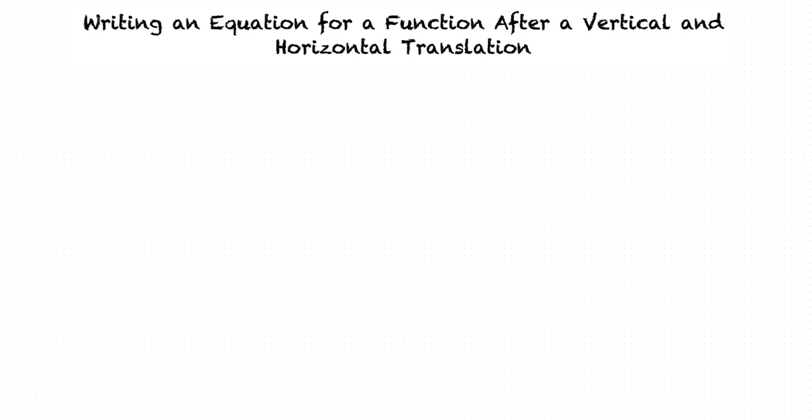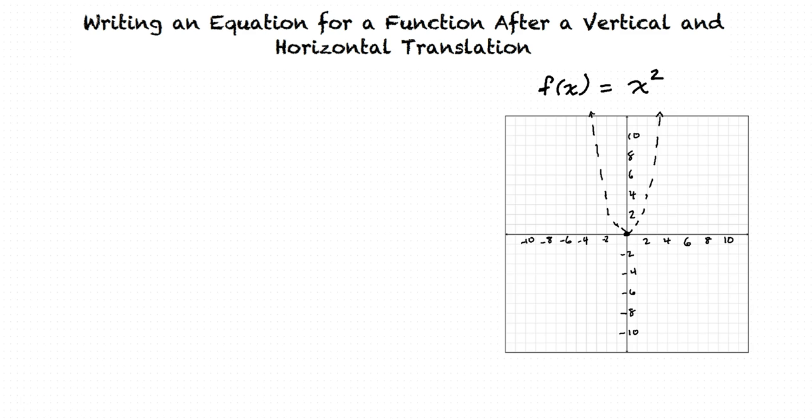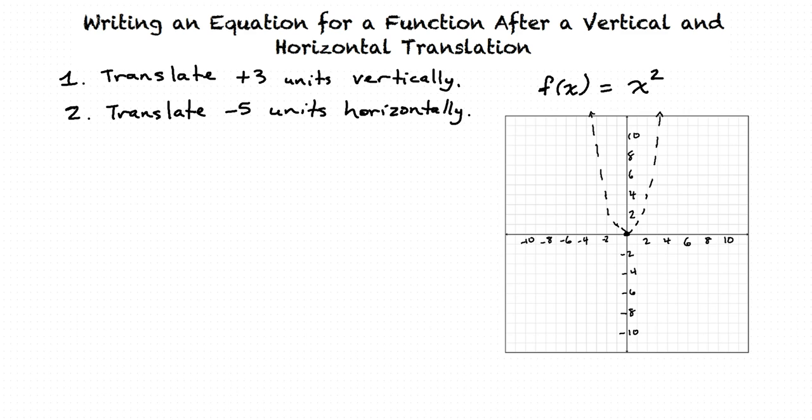Let's look at the function f of x equals x squared. Our goal for this problem is to translate this function vertically 3 units and horizontally negative 5 units, and then write the equation of the function after that translation.